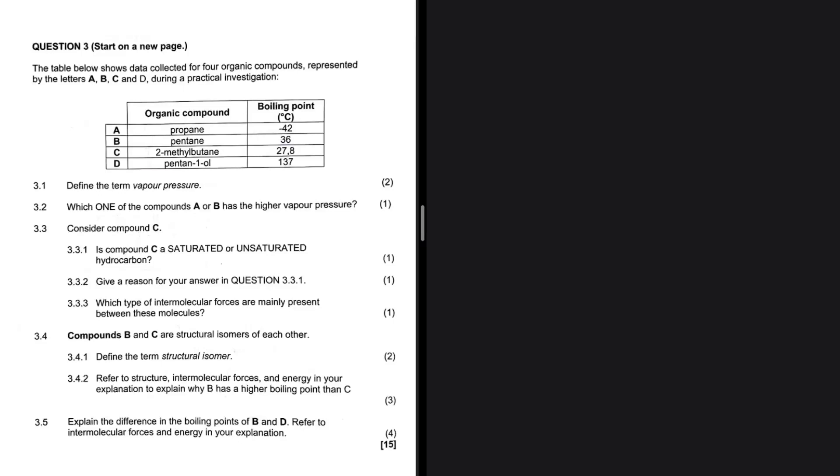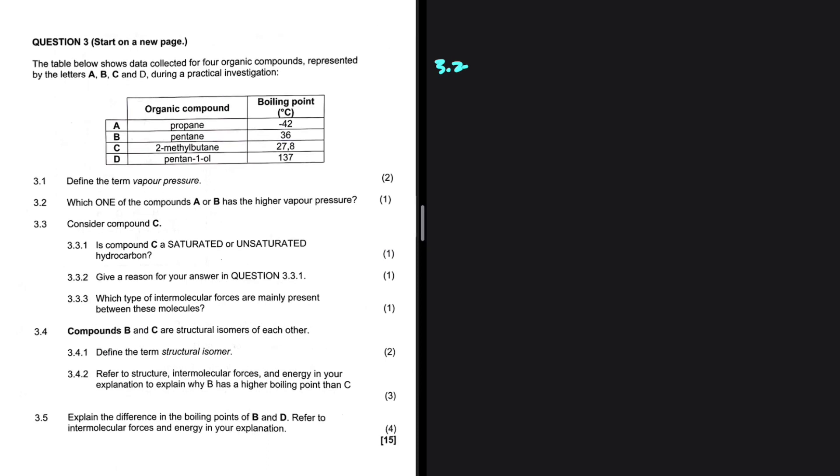Pressure exerted by a vapor at equilibrium with its liquid in a closed system. That is vapor pressure. Question 3.2: Which one of the compounds A or B has the higher vapor pressure?